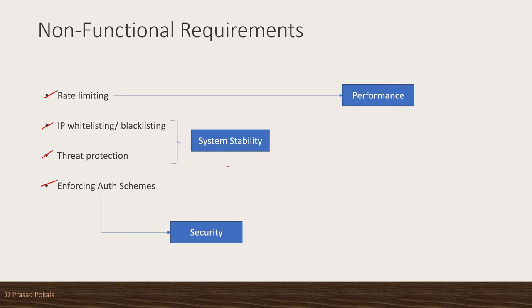Some of them are security related. So security, performance, and proactively making system stability concerns properly addressed — these are particular concerns. For example, security could be related to making sure that all the transactions on the wire go over HTTPS protocol only. There should not be plain HTTP — they want to enforce such rules.